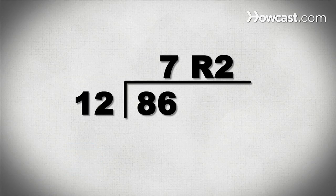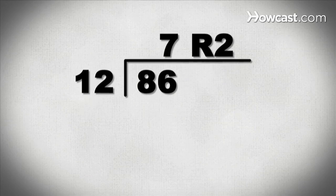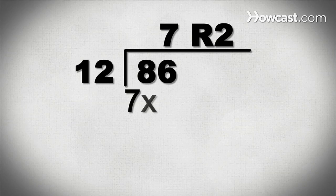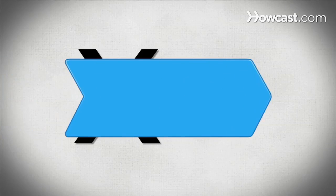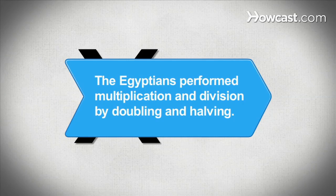Step 7. Clear any leading zeros on the left side of the quotient. Now check your result by multiplying the quotient by the divisor to see whether or not you get the dividend. Did you know the Egyptians performed multiplication and division by doubling and halving.